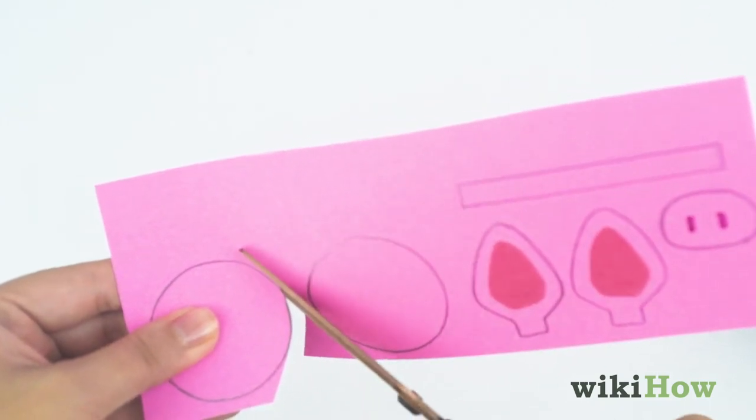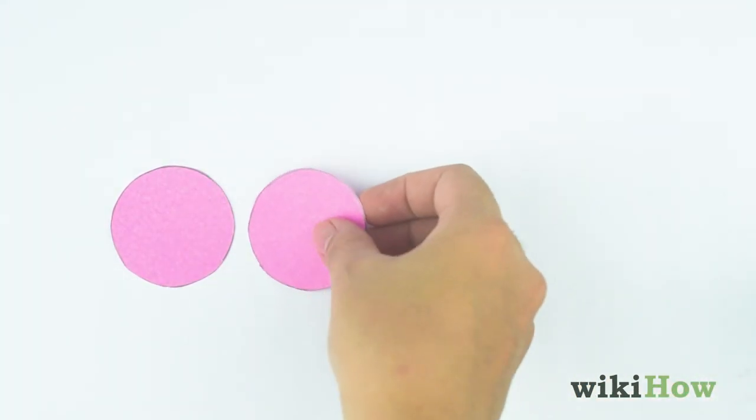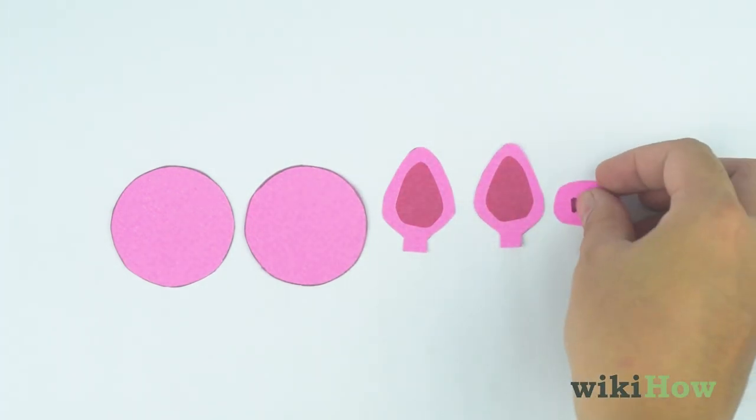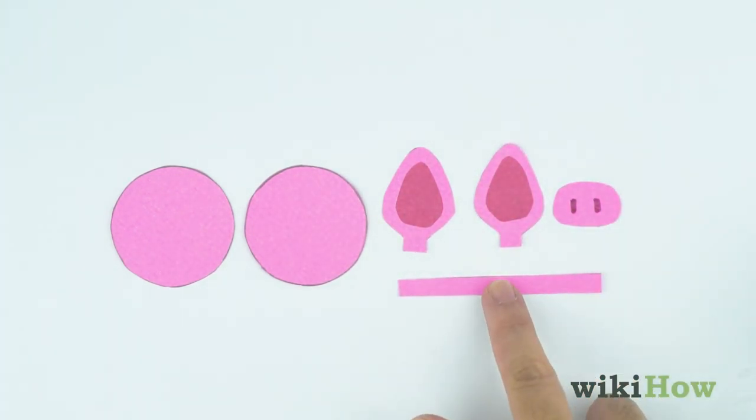Then, cut two circles, two triangle shapes for ears, and an oval and small rectangle for the nose out of cardstock.